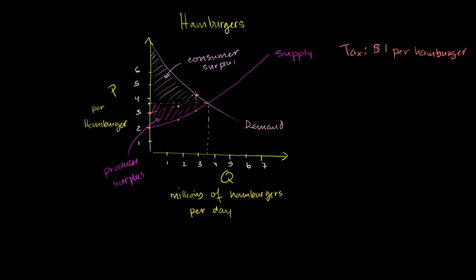Because this is a fixed dollar amount rather than a percentage, at every point the vertical distance is $1. From the consumer's point of view, we now have a new equilibrium. The old $3.75 equilibrium is no longer possible, since consumers and producers can't both see the same price. The new equilibrium price the consumers pay is a little over $4 per burger, and the new equilibrium quantity is about 3 million burgers per day.